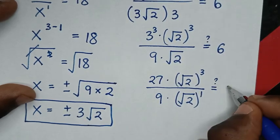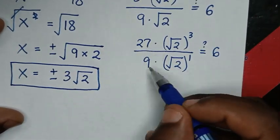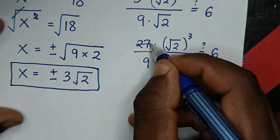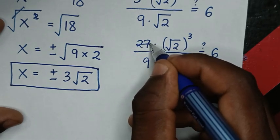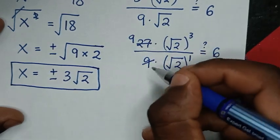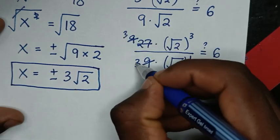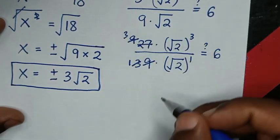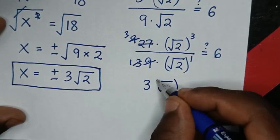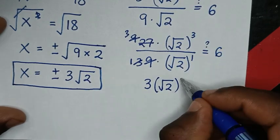Then 27 divided by 9 — 27 divided by 9 is 3. Then we take this power minus this power for the square root of 2, so it will be 3 minus 1 which is 2. So it will be 3 times square root of 2 bracket to the power 2.